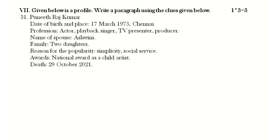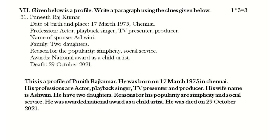Here is the profile writing of Puneet Raj Kumar. This is a profile of Puneet Raj Kumar. He was born on 17th March 1975 in Chennai. His professions are actor, playback singer, TV presenter, and producer. His wife's name is Ashwini and he has two daughters. The reason for his popularity is simplicity and social service. He was awarded the national award as a child artist. He died on 29th October 2021. This is a simple version to make it easy to write any profile in the examination.